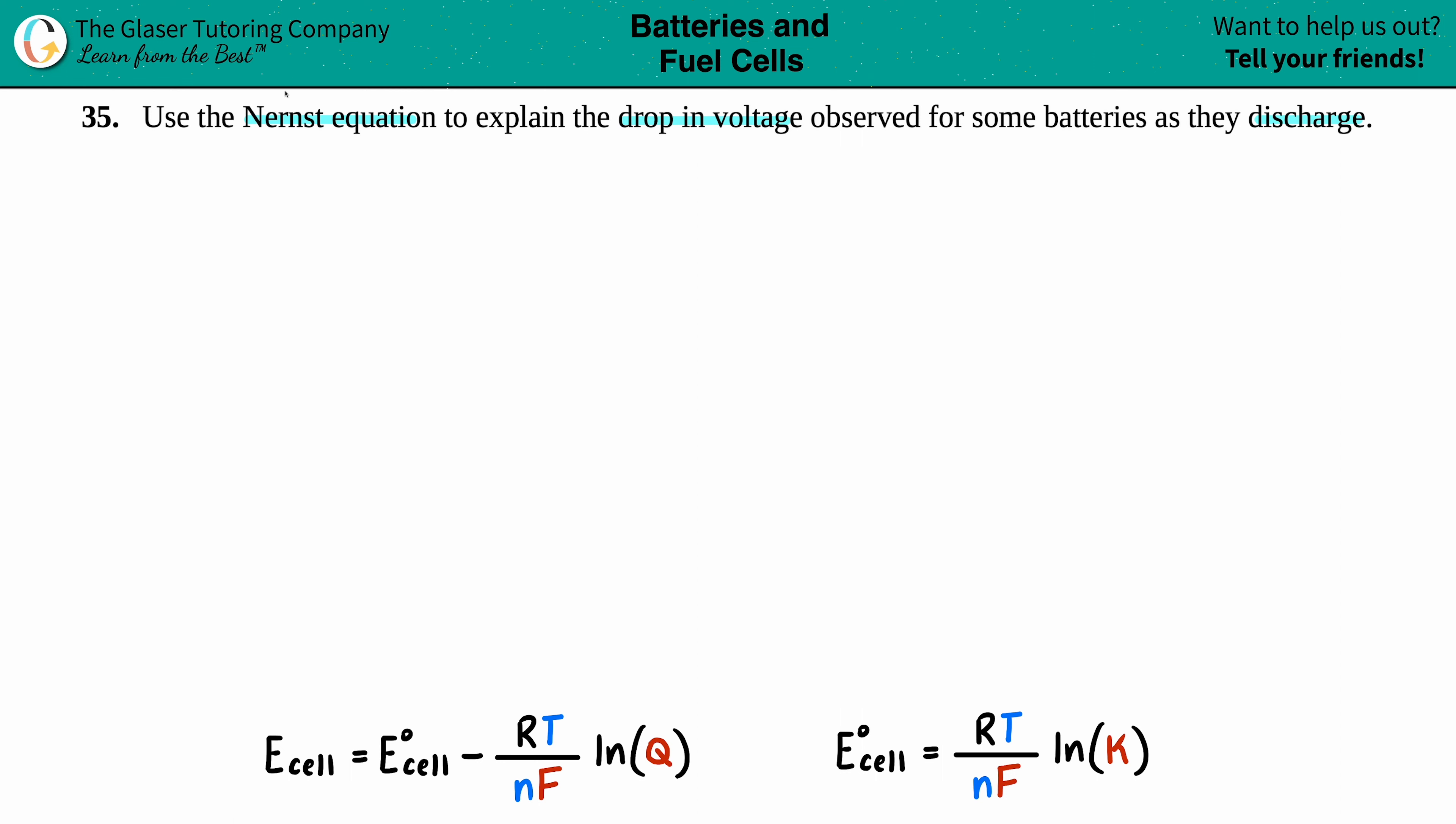Alright, so we're only allowed to use the Nernst equation. There are two variations: this equation for non-standard cells (the regular E_cell), and this equation for the standard E_cell with this notch. We're only allowed to use those two Nernst equations to explain the drop in voltage.